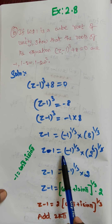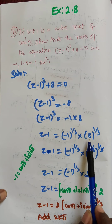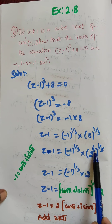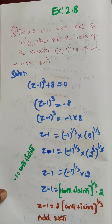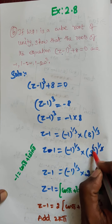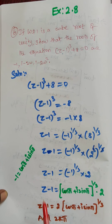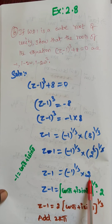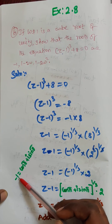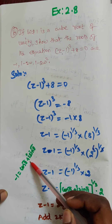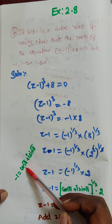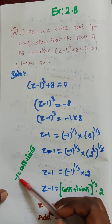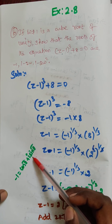So z minus 1 is equal to minus 1 to the power 1 by 3 into 8, which we can write as 2 cubed to the power 1 by 3. Now the cube and cube get cancelled, so z minus 1 is equal to minus 1 to the power 1 by 3 into 2. Now minus 1 is equal to cos pi plus i sin pi, because cos pi equals minus 1 and sin pi equals 0. So we can write minus 1 as cos pi plus i sin pi.